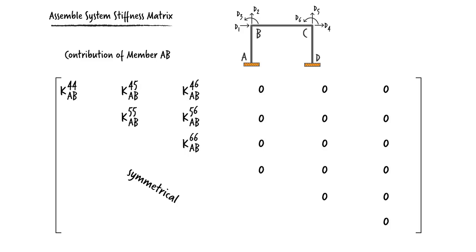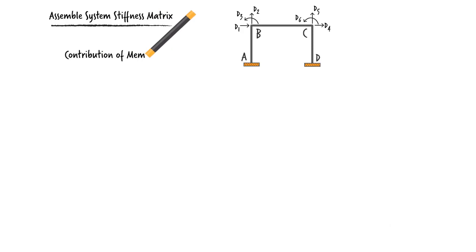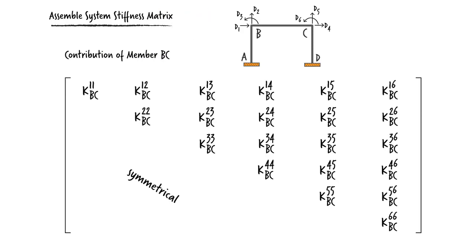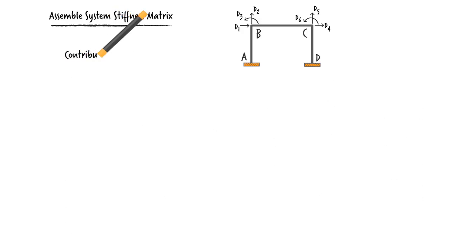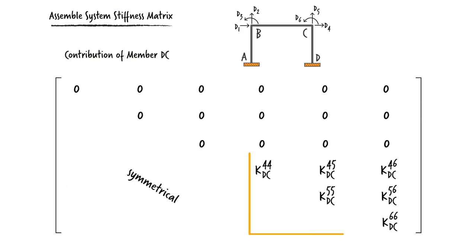By contrast, BC contributes to the frame stiffness in all six directions, since joints B and C are located at the ends of the member. And DC contributes to the stiffness of the system only in directions 4, 5, and 6, since the other three directions are not shared with the member.